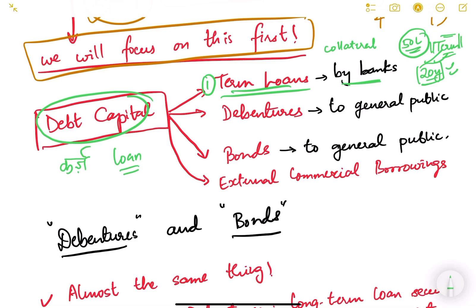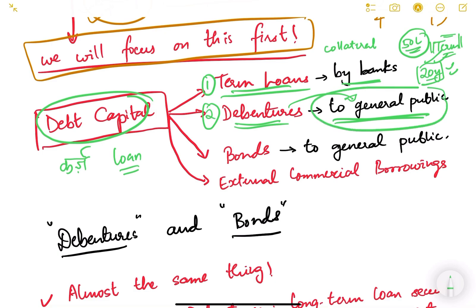The second type is debentures — securities issued by a company or corporate to the general public. Instead of going to banks, these companies go to the general public and take money from them. People like you and me invest in these debentures, the company gets funds, and after the maturity period the public gets their money back along with interest.